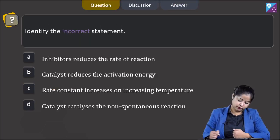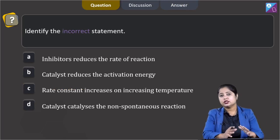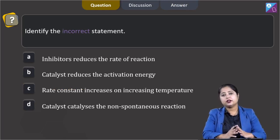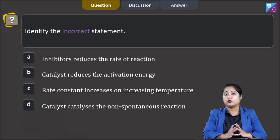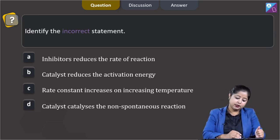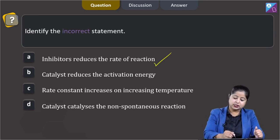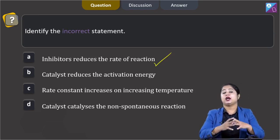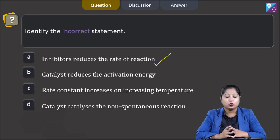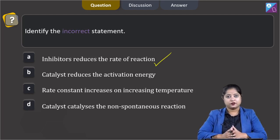Moving to the next question: identify the incorrect statement. In this question we are given 4 statements and we have to identify the incorrect one. Statement 1 is: inhibitors reduce the rate of reaction. This is a correct statement, as inhibitors are substances which reduce the rate of reaction.